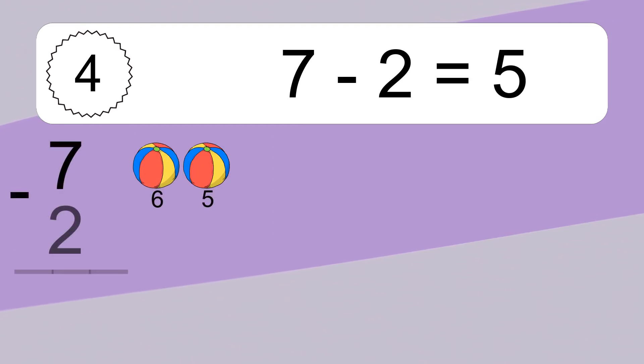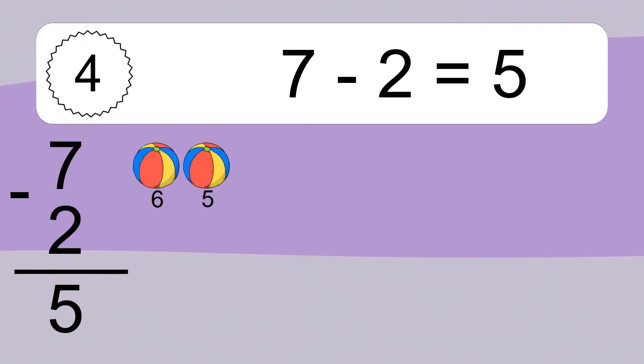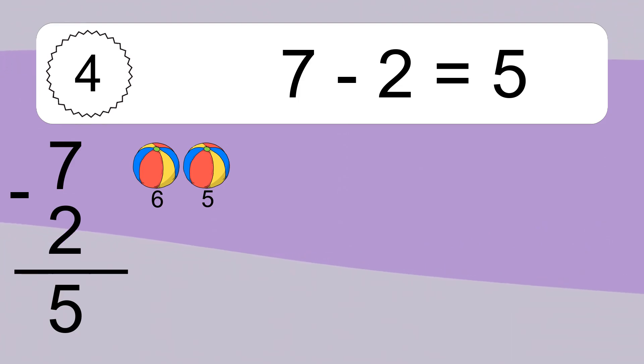7 minus 2 equals 5. Let's count it: 6, 5.